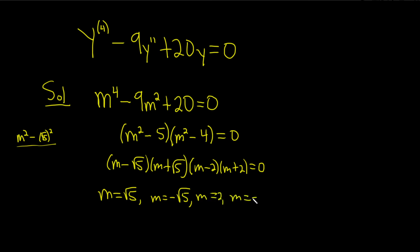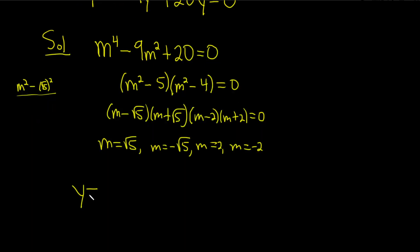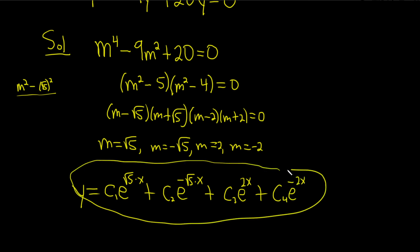And so whenever you have distinct real roots, the answer is of the form y equals c1 e to the square root of 5 times x, plus c2 e to the negative square root of 5 times x, plus c3 e to the 2x, plus c4 e to the negative 2x. And that would be the answer to this differential equation.